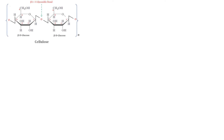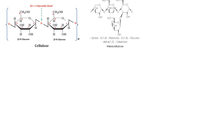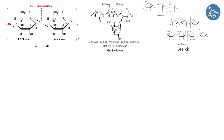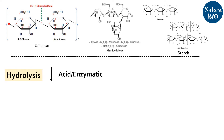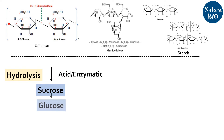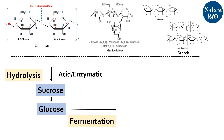Cellulose, hemicellulose or starch-rich biomass is first undergone acid or enzymatic hydrolysis to form simple sugar, for example sucrose. The sugar is further broken down to glucose and fermented to ethanol.